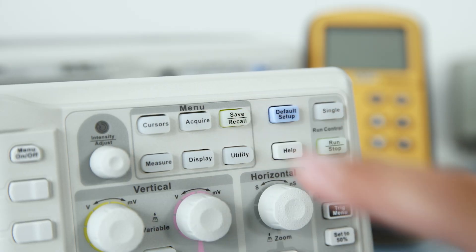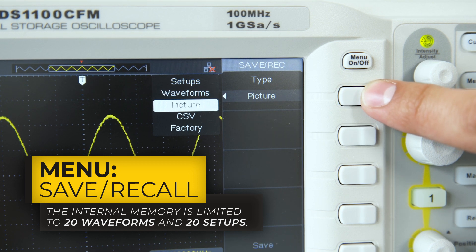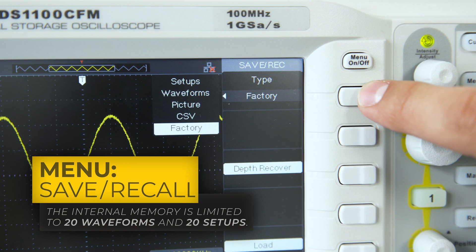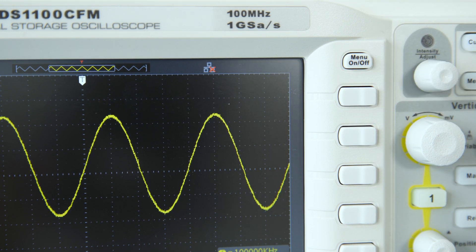You can use the Save Recall menu to save and recall setups, waveforms, pictures, comma delimited files, and factory settings to or from internal or external memory.